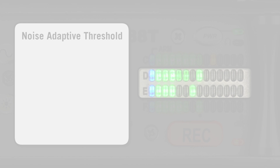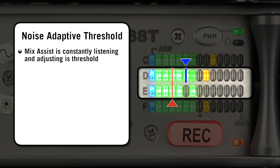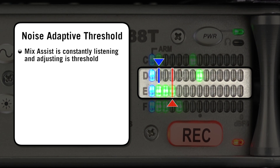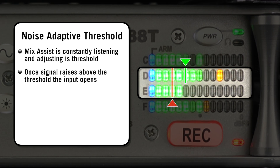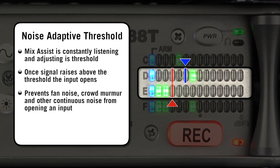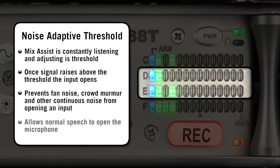The first principle is Noise Adaptive Threshold. Unlike a fixed threshold gate, Mix Assist is constantly listening to the mic inputs for the noise level of each input and adjusting its threshold to match that noise level. Once signal rises above this adaptive threshold, the microphone's channel opens. This prevents background noise such as fan noise, crowd murmur, and other continuous noise from causing an input to open, while allowing normal speech to open the mic.